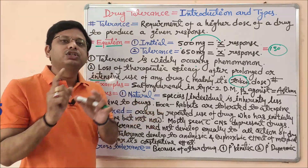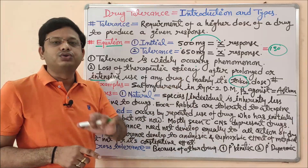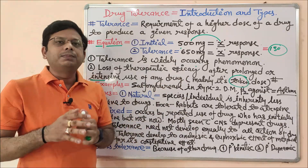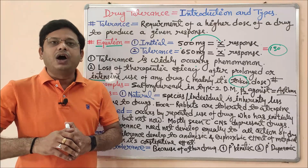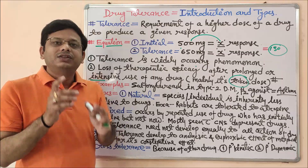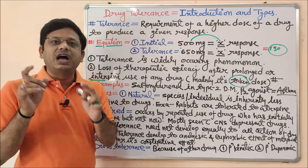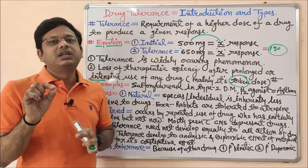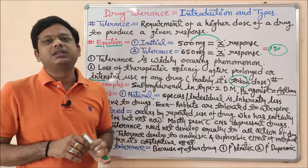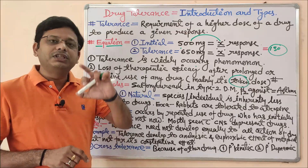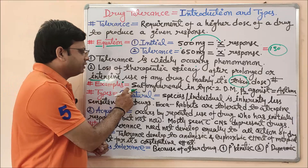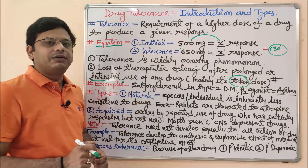An important distinction: resistance is for the drug itself, but tolerance is for a particular dose. These are very different concepts — we will cover resistance later. In tolerance, the drug remains the same but the quantity or dose needs to be increased to get the same effect as you used to get earlier.